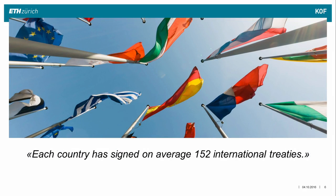International cooperation between countries has also increased dramatically. The average number of international treaties per country has risen from 32 to 152 in the last 40 years. All these examples express in one way or another what globalization is about.